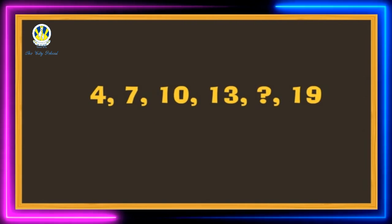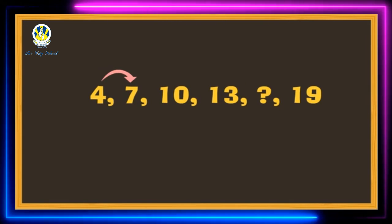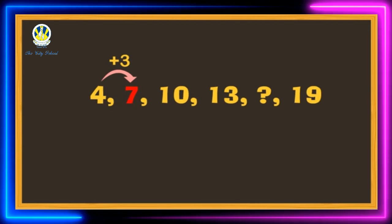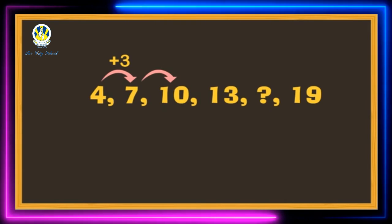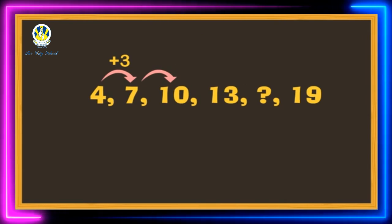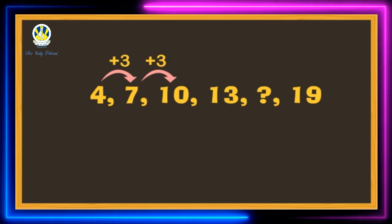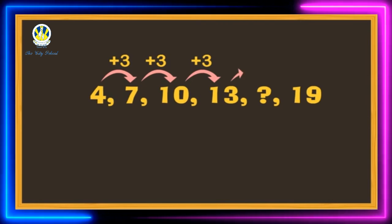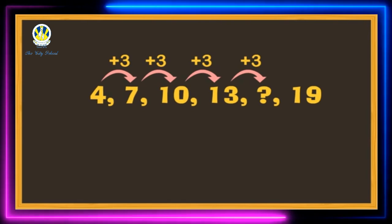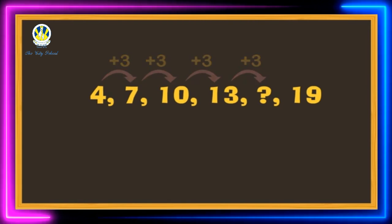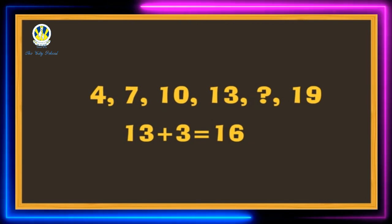Let's see another example. What do you do to 4 to get to 7? We will add 3 to 4 to get to 7. Now what do you do to 7 to get to 10? Yes, we will add 3 to 7 to get to 10. So the rule is to add 3, and keep adding 3 to the numbers to find the missing numbers. The missing number will be 13 plus 3 equals 16.